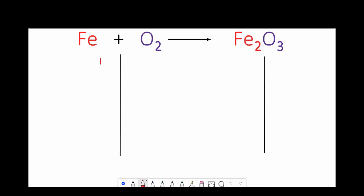And then I'm going to go ahead and fill out how many atoms of each element we have on either side. So I've got one iron atom on the reactant side - by the way iron is Fe, oxygen is O2, just so we're clear. I've got one iron atom on the reactant side, two on the product side. I've got two oxygen atoms on the reactant side and three oxygen atoms on the product side.